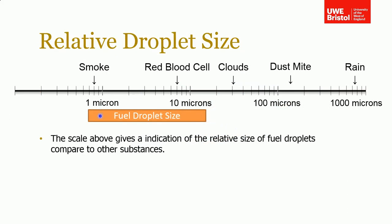To put the size of the fuel droplets in context: typical drop sizes range from sub-micron — less than 1 micron — up to around 20 to 40 microns. They have a range of droplet sizes. Raindrops are up in the 1,000 micron range, dust mites around 100 microns, clouds around 50 microns. So you're talking about the size of smoke particles and red blood cells as the fuel droplet size range.